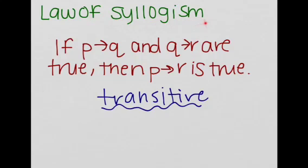Let's look at the law of syllogism. So this says if p to q and q to r are true, then p to r is true. This kind of reminds me of the transitive property, doesn't it?